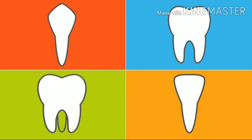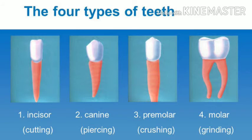Molars are very large teeth which are present just behind the premolars towards the back of our mouth. The molars have a larger surface area than premolars, and the function of molars is the same as that of premolars — that is, molars are for chewing and grinding the food. There are six molars in each jaw, three on each side.